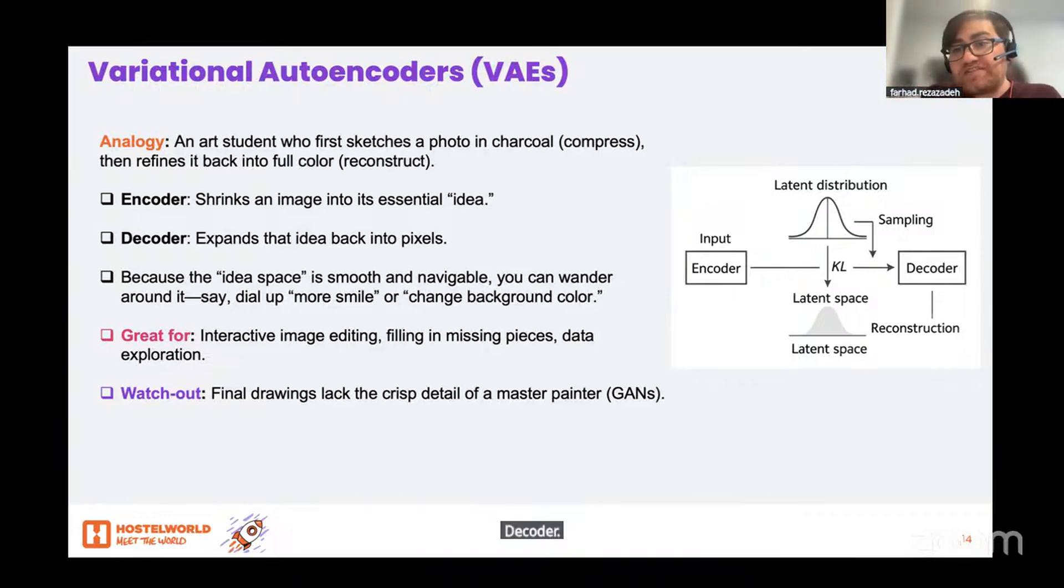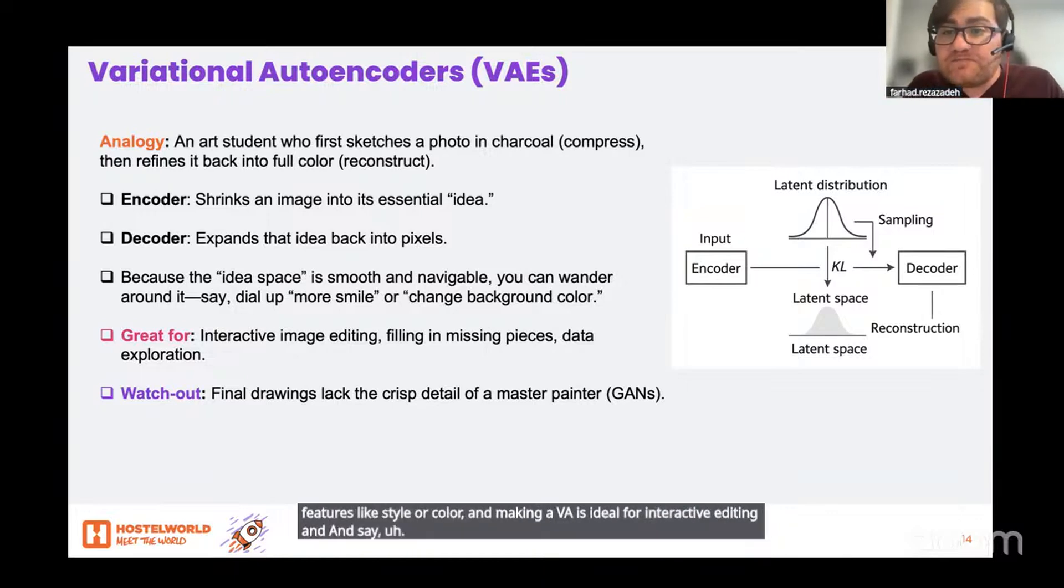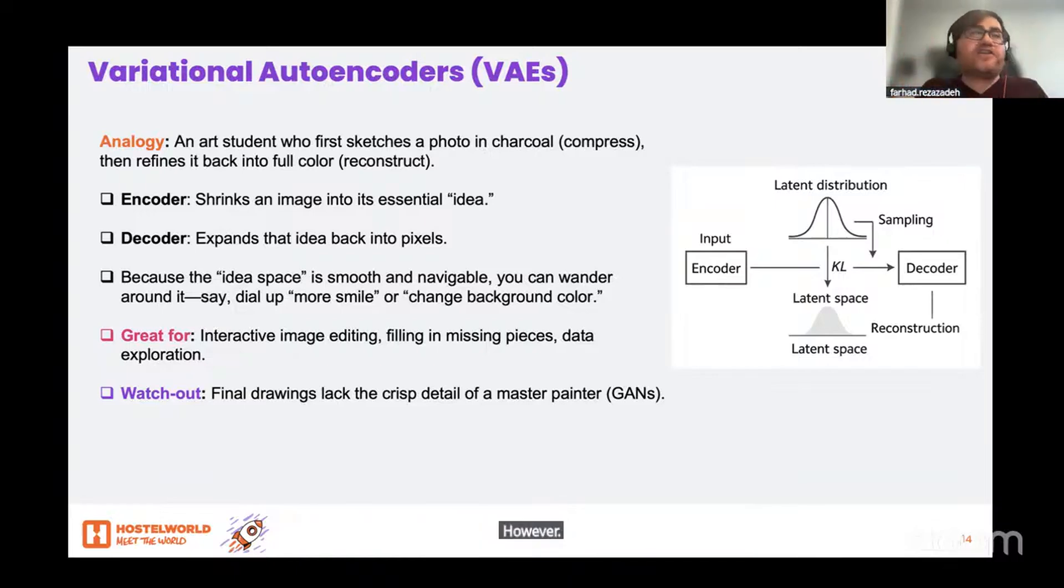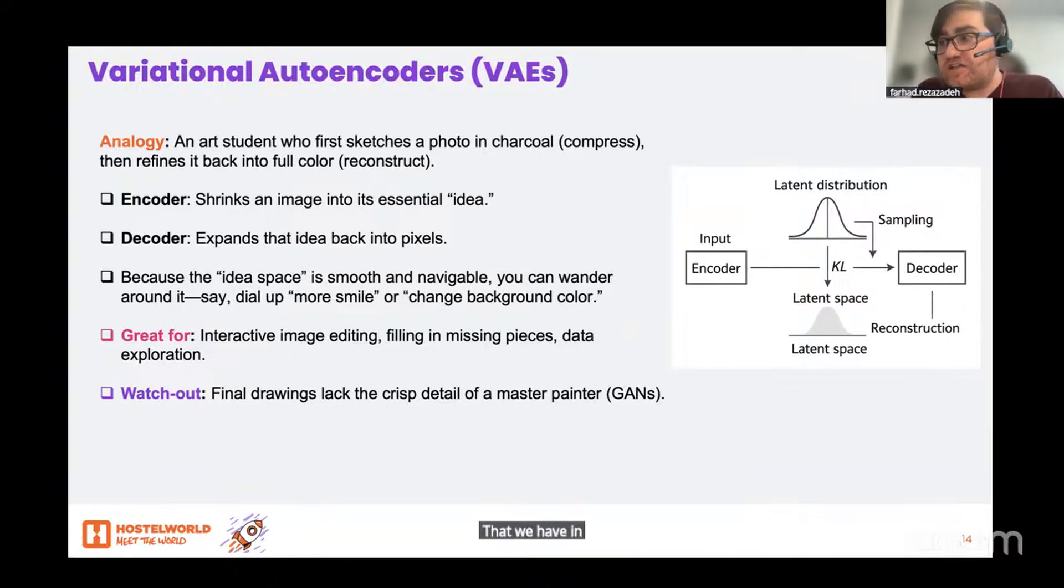This compressed space is smooth. You can slide around it to tweak features like style or color, making VAEs ideal for interactive editing and filling in missing pieces. However, the final creations tend to be a bit softer around the edges, compared to the crisp realism that we have in GAN's methods.